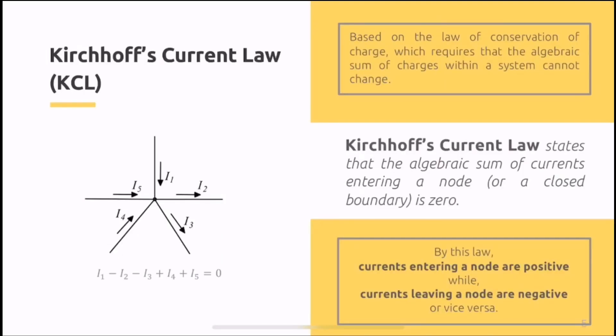First is Kirchhoff's Current Law. Kirchhoff's Current Law states that the algebraic sum of currents entering a node or a closed boundary is equivalent to zero. Yung pumapasok, the algebraic sum, algebraic meaning it's a scalar value, we simply add them arithmetically. So when we combine all the currents entering a node, that should equate to zero. Why? Because this is based on the law of conservation of charge.